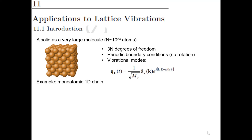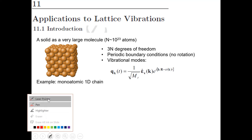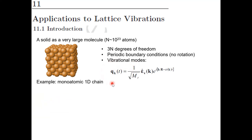We have roughly 3N vibrational normal modes. Once you apply periodic boundary conditions, you make a constraint that you cannot have rotations of that molecule anymore, so rotations are irrelevant for describing this problem. The wave vector k is a good quantum number to label your normal mode. A typical normal mode coordinate q depends on position and on time.